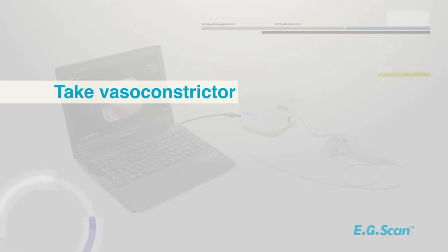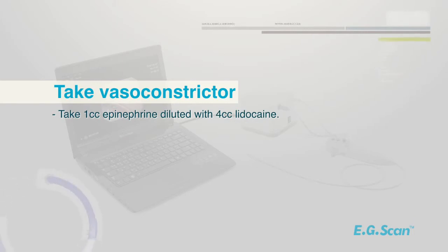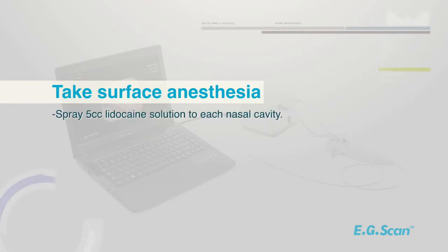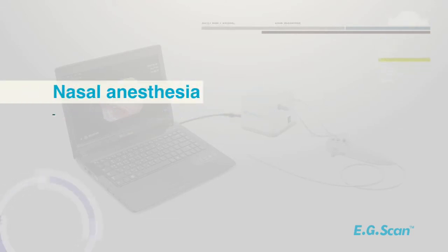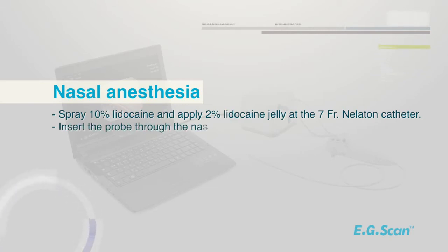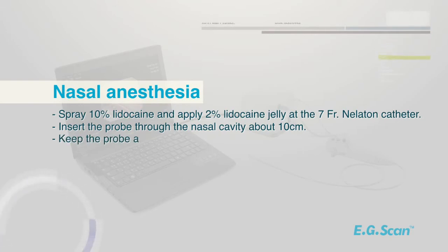Take vasoconstrictor — take 1 cc epinephrine diluted with 4 cc lidocaine. Take surface anesthesia — spray 5 cc lidocaine solution to each nasal cavity. Nasal anesthesia: spray 10% lidocaine and apply 2% lidocaine jelly at the 7-nelaton catheter. Insert the probe through the nasal cavity about 10 cm and keep the probe for about 10 minutes.